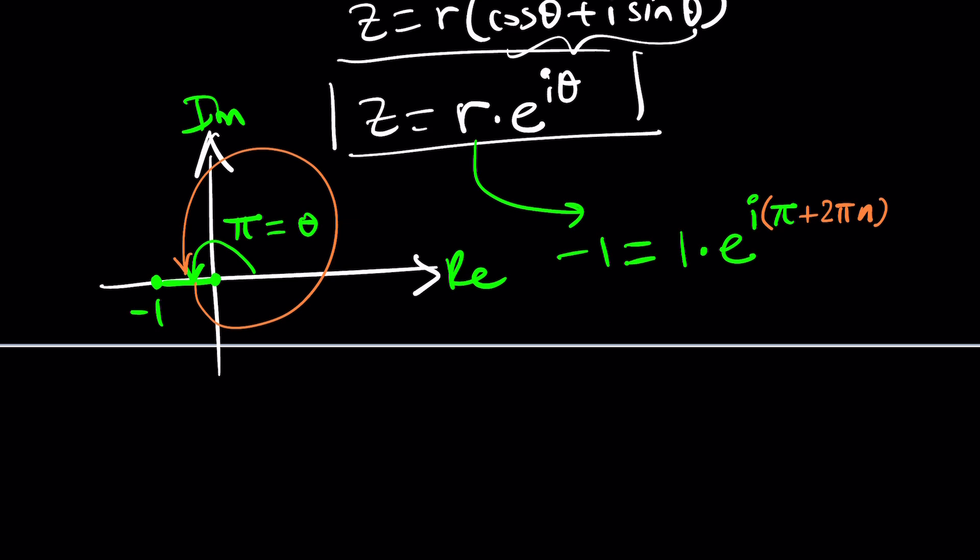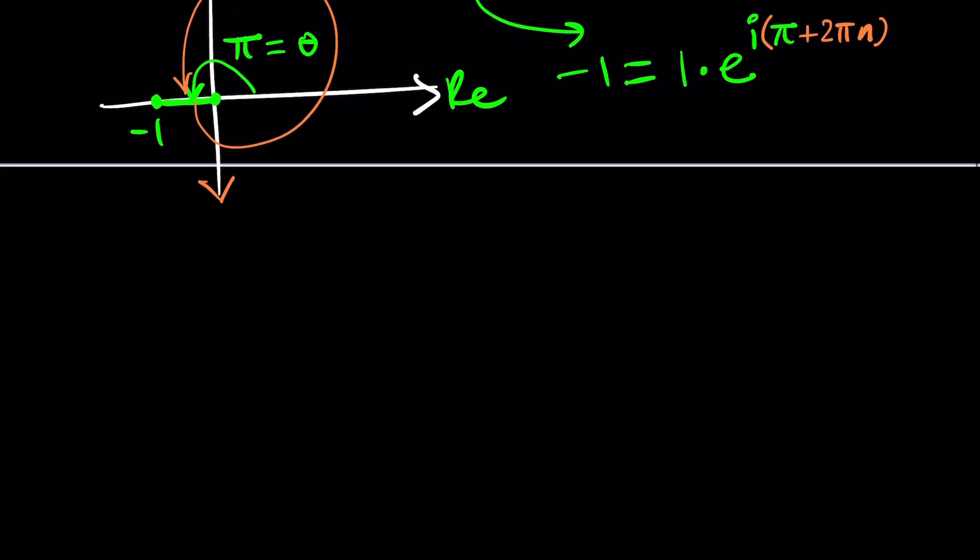So we were able to write negative one as an exponential, which is what's beautiful about Euler's formula. Of course, that makes him the best, in my opinion. But anyways, let's go ahead and see how that applies to our scenario. Remember what we talked about earlier? We said that negative one squared is one. Let's check it out. Maybe it's not true. Who knows? Maybe we'll make a breakthrough.